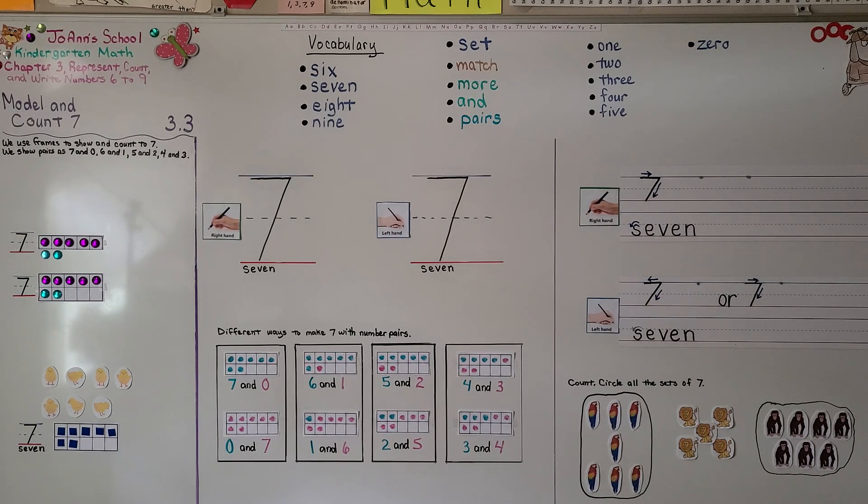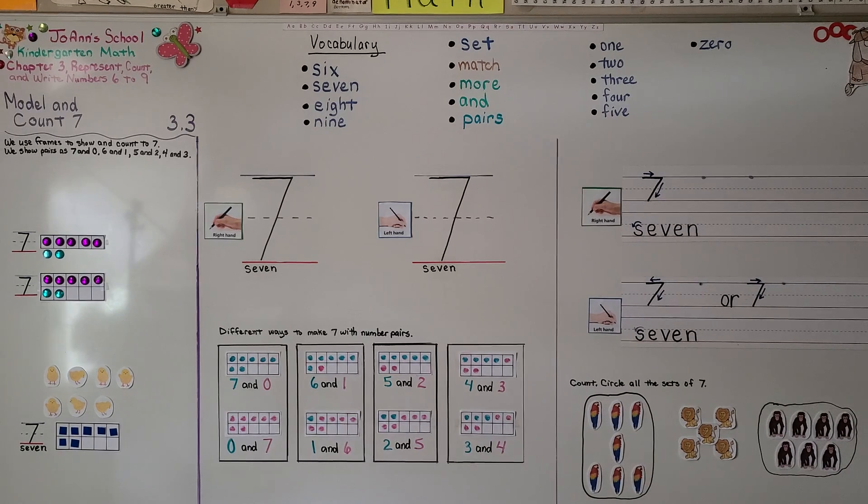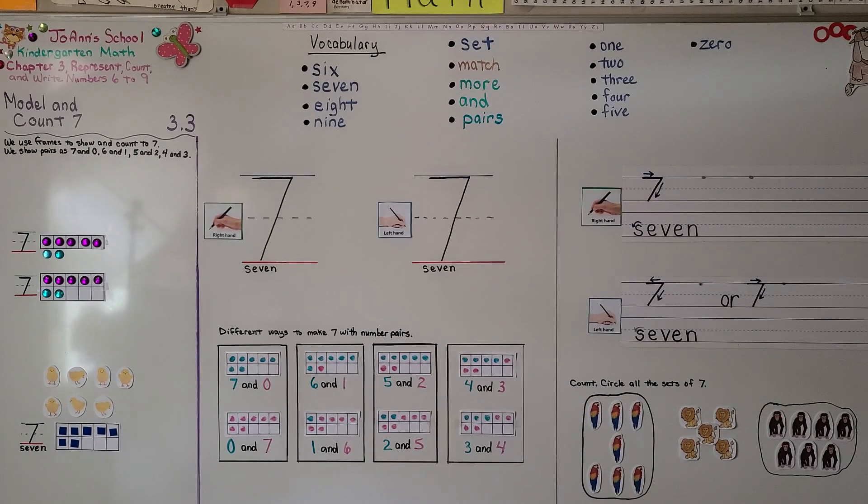Our next lesson, 3.4, we're going to count and write numbers to 7. We're going to do it right-handed and left-handed. I hope you'll join me and I hope you have a really great day. Bye!